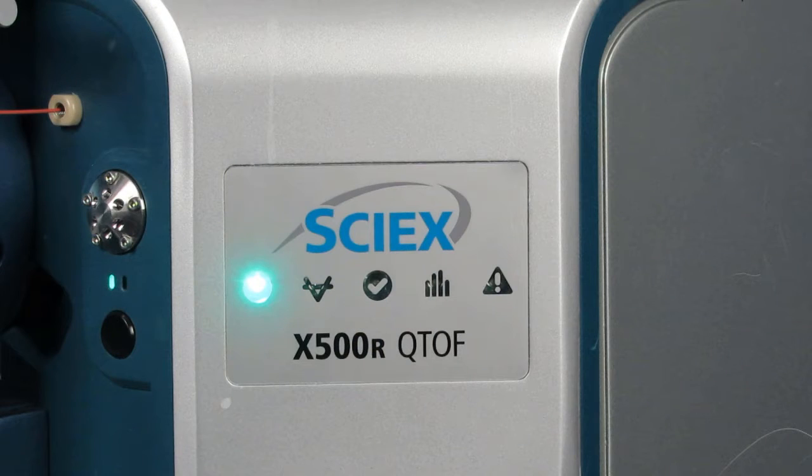Press and hold the vent button for 3 seconds. Allow the system to vent for 15 minutes. The turbo pump will spin down gradually.